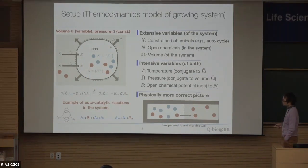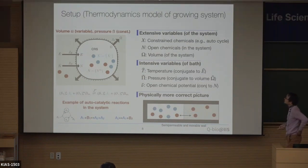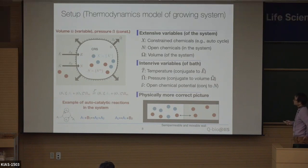As a specific example: A1 and B1 react to generate two A2, so B1 is a resource to generate A2 from A1. A2 breaks down to one A1 and one B2, where B2 is a waste product. This waste and resource can diffuse across the boundary. So A1 and A2 form an autocatalytic cycle. The temperature and pressure are kept constant, and the chemical potential of the open chemicals in the environment are kept constant.